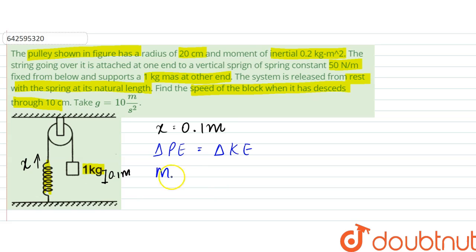This one potential energy would be equal to half kx square, that is spring energy, plus half I omega square, that is due to this pulley, plus half mv square.